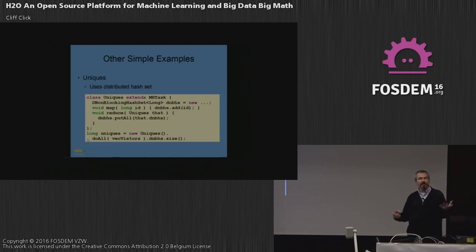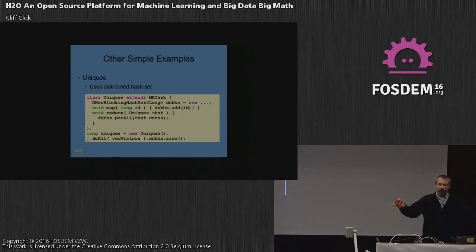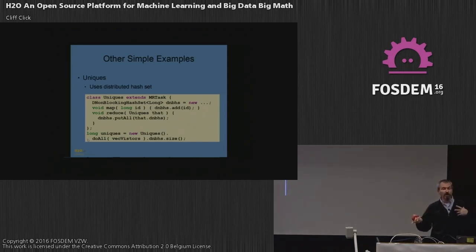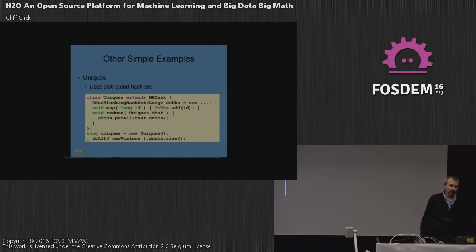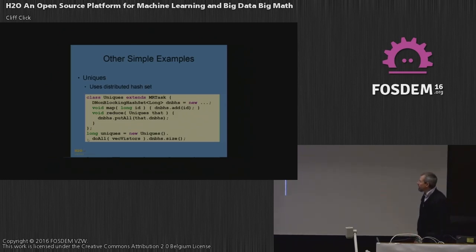Here's one that's a little different — finding uniques of a distributed dataset. Here the hash set is allocated in the constructor rather than in the map call. That means the object is initialized once when you say 'new' and shared across the cluster. The map itself adds to the same instance of the hash set as every other map on the same node — so there's one hash set per node, not one per map. The map calls are all sharing it, so it must be a concurrent-safe hash set. However, there's still a reduction step, since separate nodes are accumulating results independently. In about six or seven lines of code, you've found uniques across the entire cluster.